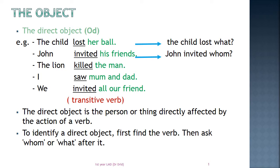Finally, we invited all our friends. We invited whom? All our friends. So, all our friends is the direct object. In all these examples, the verb is transitive. To find the direct object: first, find the verb; then, ask 'whom' or 'what' after it.